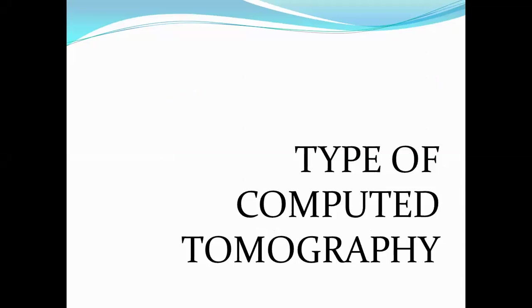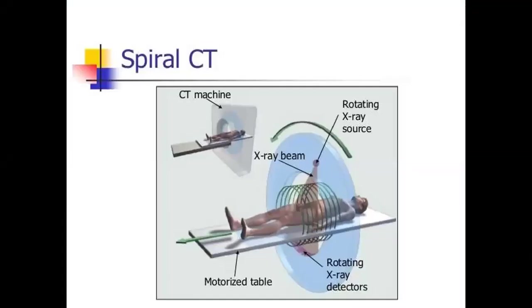Hello students. Today's topic is types of computed tomography. First, that is spiral CT scan. It is also known as helical CT scan, and this helical CT scan is used in third generation or fourth generation computed tomography.